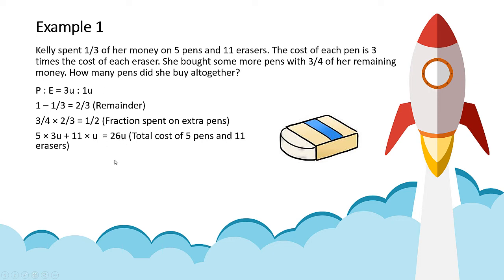And since Kelly spent one third on 26 units, can you make a guess what is the total amount of money? Basically just 26 units times 3. You get 78 units. So basically the total amount of money that Kelly has is 78 units.